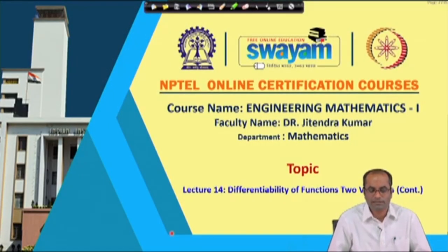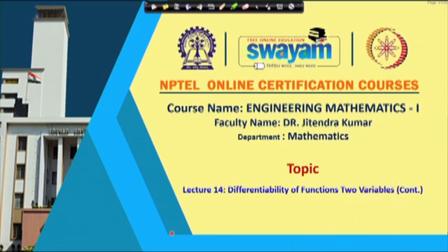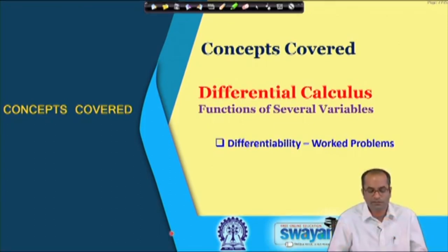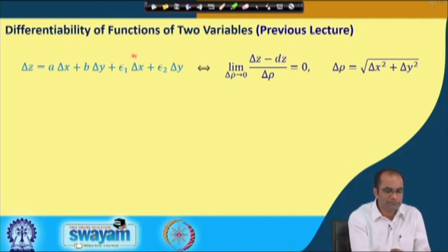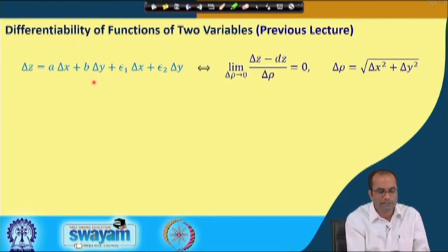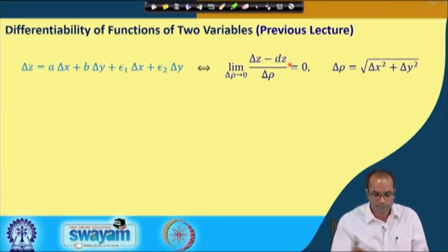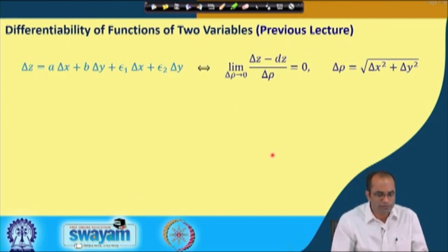Welcome back to lectures on Engineering Mathematics 1. This is lecture number 14, and we will continue the differentiability of functions of 2 or several variables with many worked problems today. In the previous lecture, we observed the equivalent definition of differentiability: expressing delta z in terms of a·delta_x + b·delta_y + epsilon_1·delta_x + epsilon_2·delta_y, or finding this limit equal to 0, which was quite useful for proving differentiability of various functions.